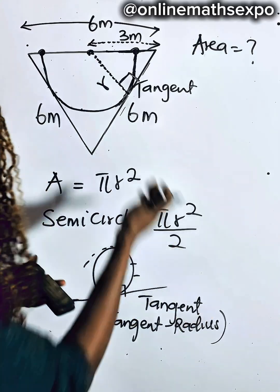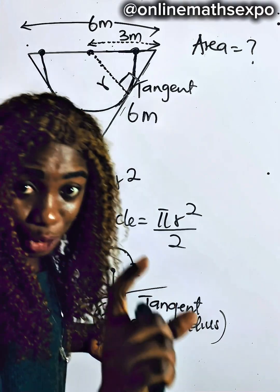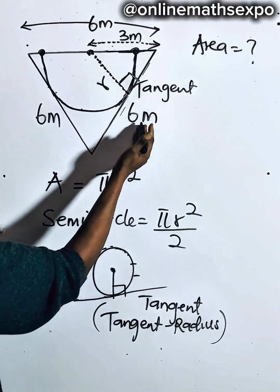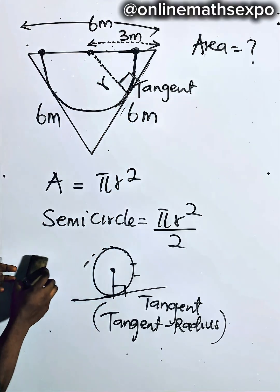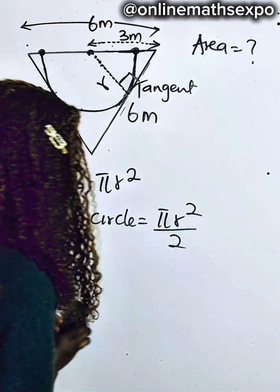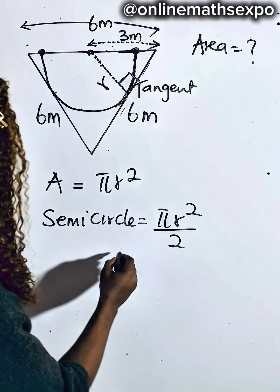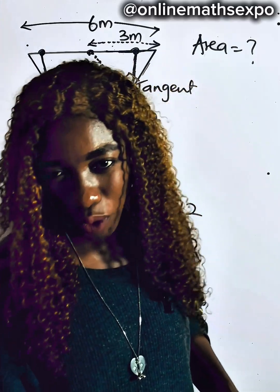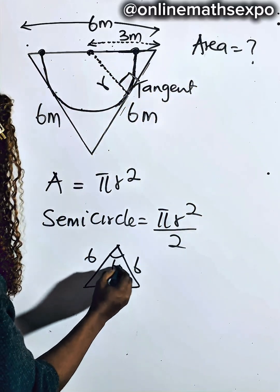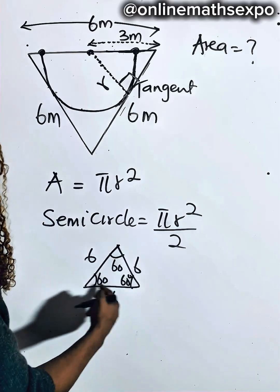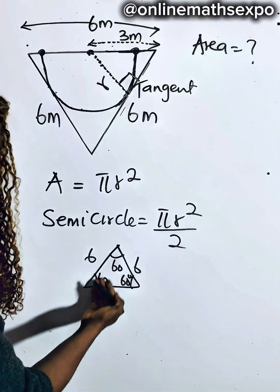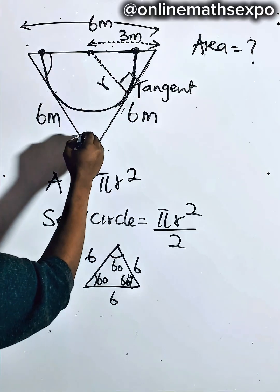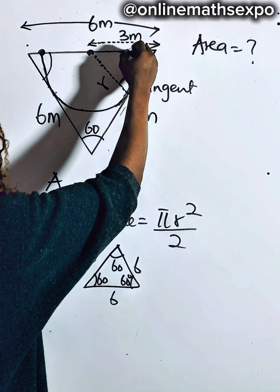Remember that this is an equilateral triangle — all three sides are equal. Whenever a triangle has all three sides the same, it is an equilateral triangle. For every equilateral triangle, the angles are also all equal, and since the angles must sum to 180 degrees, each angle is always 60 degrees. So this triangle makes 60 degrees at each corner.